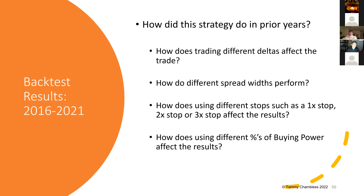People often ask me: what if I sell delta 25 instead of delta 5? Doesn't that mean I make more money? Well, it could be, but you also get stopped out more. And what about trading a five-wide spread instead of a 25-wide or 50-wide spread — don't I make more money? Not necessarily. Same thing with stops — what if I use a 0.5 stop or a five-time stop? If I give it more room, will it not go against me? Not necessarily. And how does using different percentages of buying power affect the results? I tried to address these questions in this backtest.